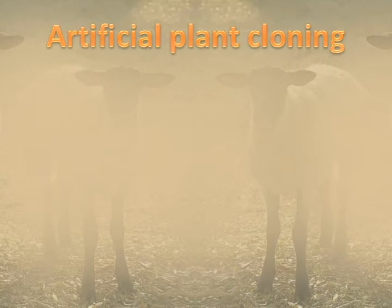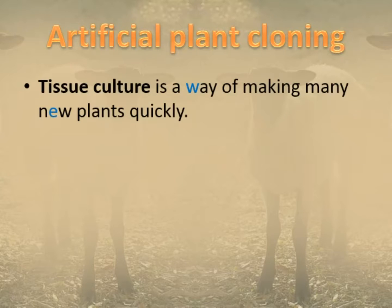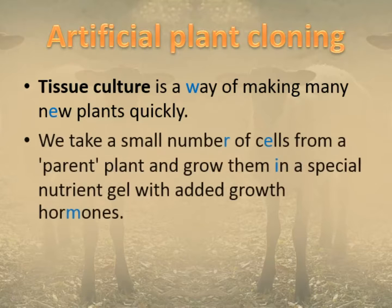Plants have been cloning themselves for millions of years, but we have now got into it. We've talked about taking cuttings, which we have known about for a long time, but tissue culture is another way to propagate plants. To take tissue culture we take cells — not cuttings — but a small number of cells from the parent plant and grow them in a special medium, a kind of gel rich in growth hormones and nutrients.